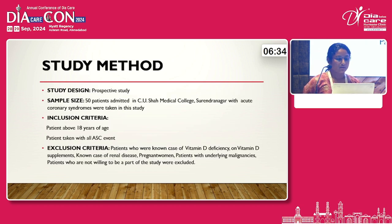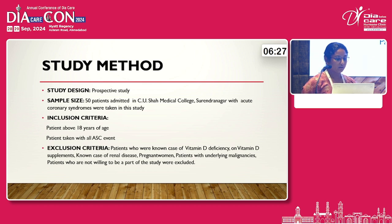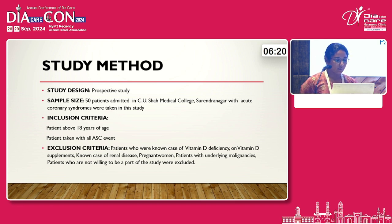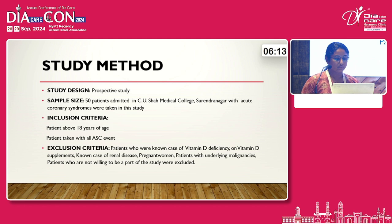The study design is a prospective study with a sample size of 50 patients at Siyusha Medical College with acute coronary syndrome. Inclusion criteria are patients above 18 years of age and all patients with ACS events. Exclusion criteria include patients who are known cases of vitamin D deficiency on vitamin D supplements, cases of renal deficiency, and pregnant women.